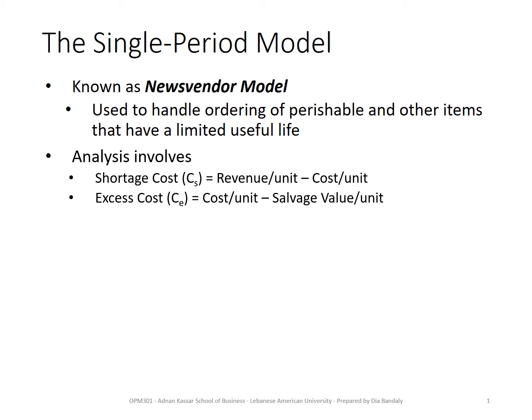What is the shortage cost? Ask yourself: what happens if you had Q equal to 100 — that's the quantity you had on hand — and demand turned out to be 130? You lost the opportunity to sell 30 more units. So what do you lose? You lose the profit that you could have made. That's why CS is revenue minus cost, which is the profit.